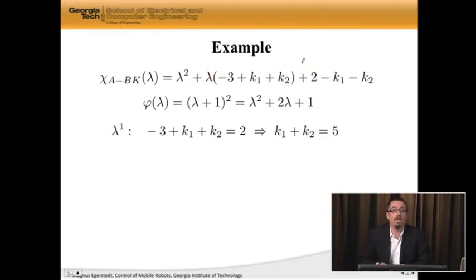For the coefficients in front of λ, we get k1 + k2 = 5. For the coefficients in front of λ^0, which means no lambdas, we get k1 + k2 = 1.